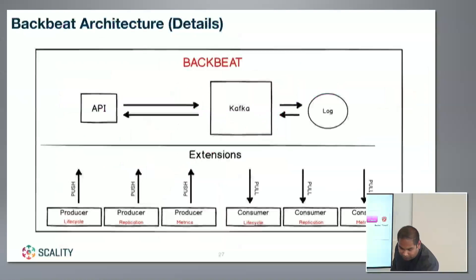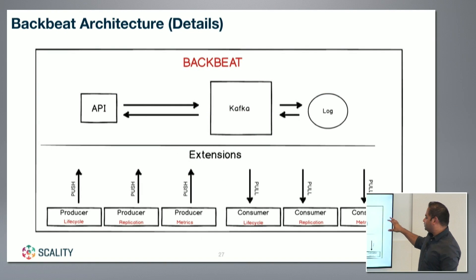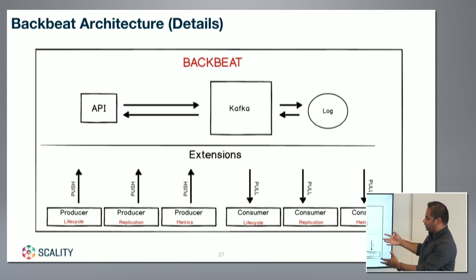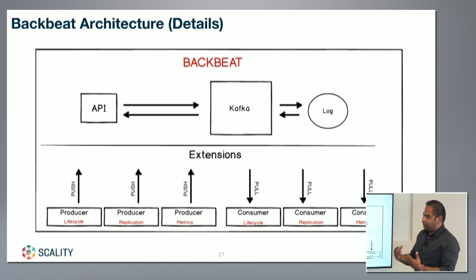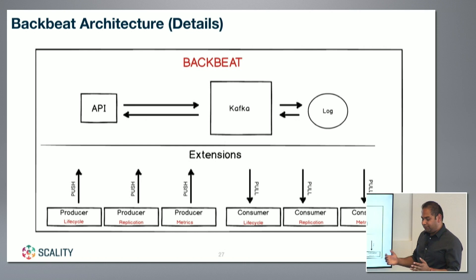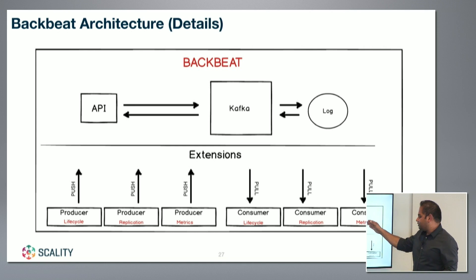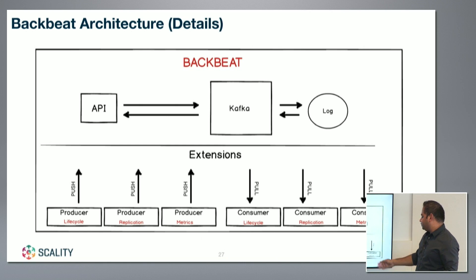Zooming in a little bit into what BackBeat looks like internally — there is Kafka at its heart. They will be exposing a REST API so that you can take a peek at the status of replication: is everything working, has it paused, what is the estimated time, how much data is to be replicated, statistics, et cetera. Kafka writes to its own log, and we have a series of producers and consumers.